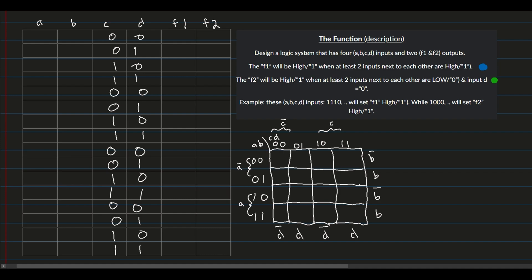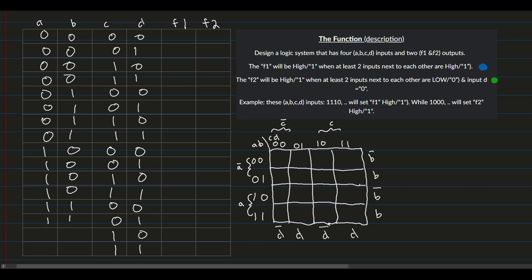For the AB columns, we print each combination four times. So we start with 0000 0000, then 01 repeated four times, then 10 repeated four times, and lastly 1111 1111. This gives us all 16 input combinations.